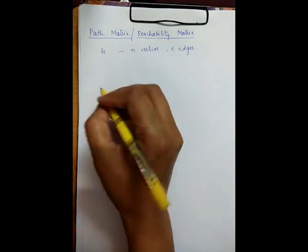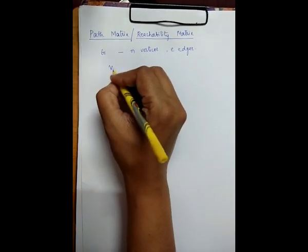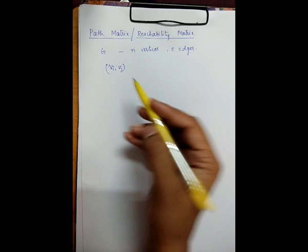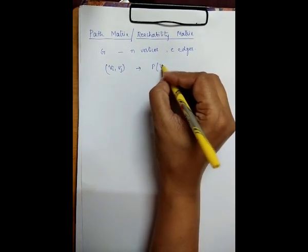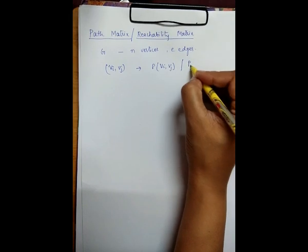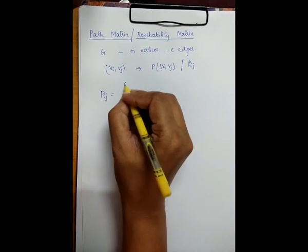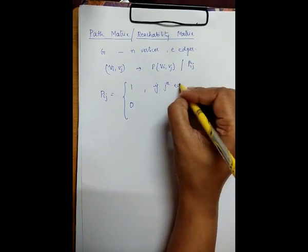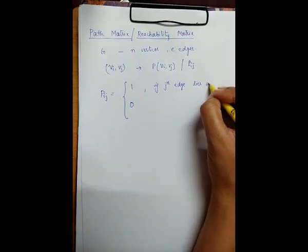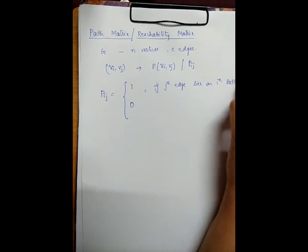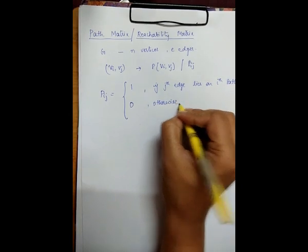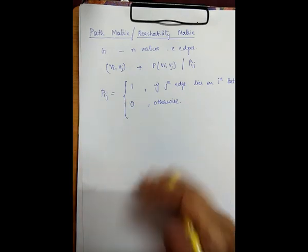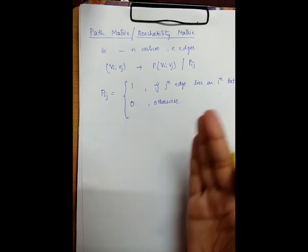So this path matrix or reachability matrix from the vertex between VI and VJ — the path between these two vertices VI and VJ is denoted as P of VIVJ, or you can say PIJ. The value of PIJ is equal to either 1 or 0. The value is 1 if the jth edge lies on the ith path, otherwise the value is 0. The rows in the matrix P correspond to the different paths between vertices, and the columns correspond to edges in G.